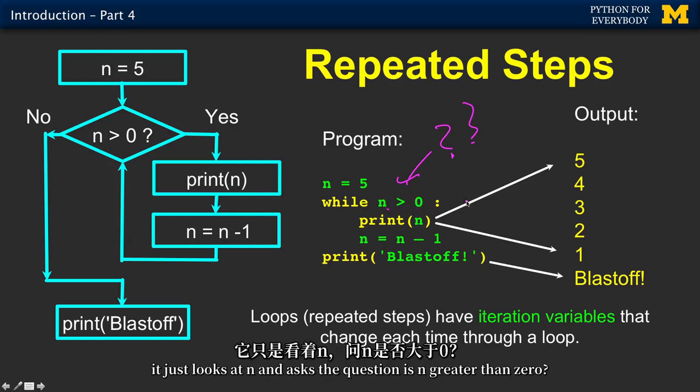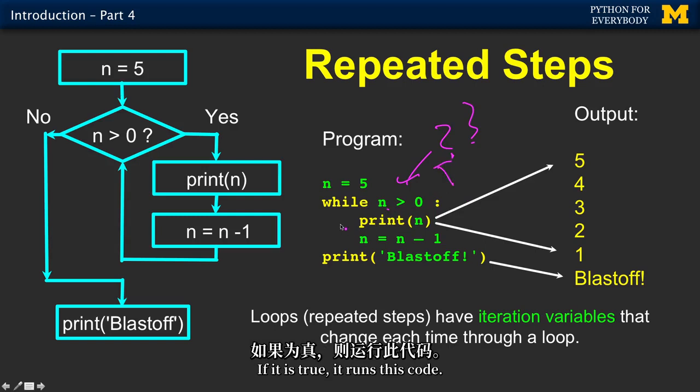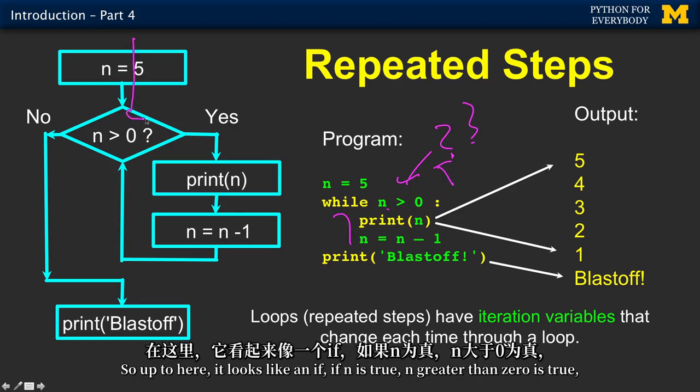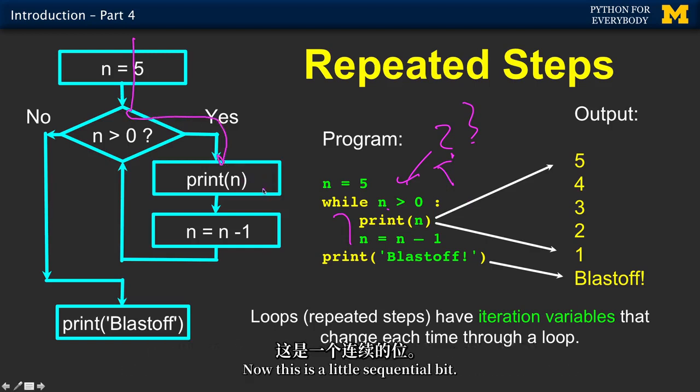If it is true, it runs this code. So just like an if, if n greater than zero is true, it runs this code. Now this is a little sequential bit. When you're done with this, what do you do? We just fall onto the next one. You'll notice that this is indented at the same level as the print statement. That's how we have repeating, or even ifs, with more than one statement in it.